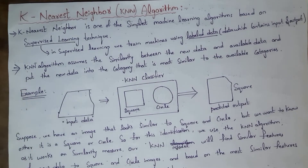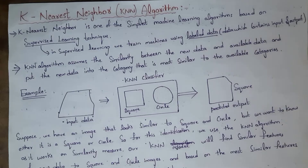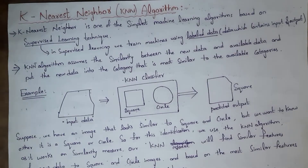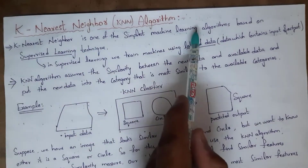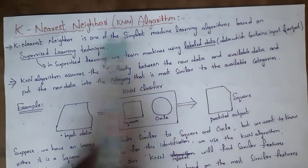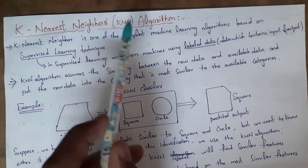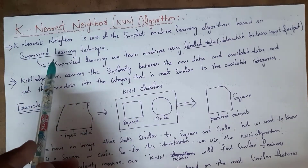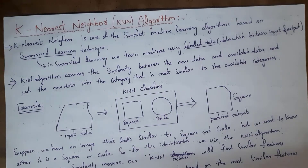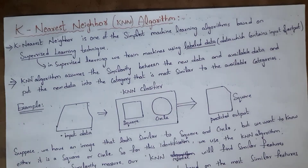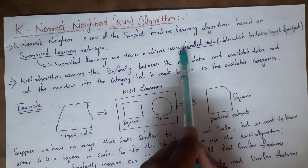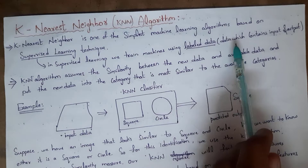Welcome to this video on the K-Nearest Neighbor algorithm, or KNN. KNN is one of the simplest machine learning algorithms, based on supervised learning technique. In supervised learning, we train machines using labeled data — data which contains both input and output.